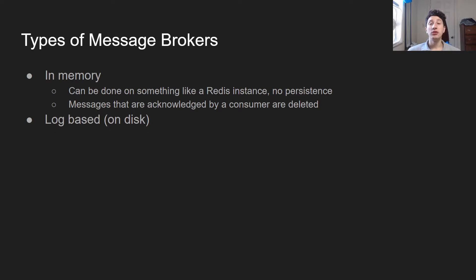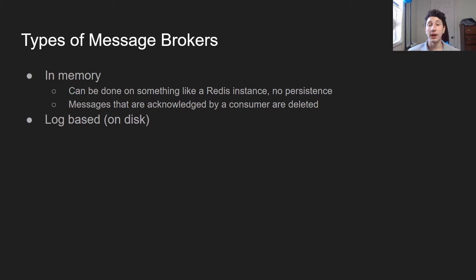So there are two main types of message brokers. The first is in-memory. For example, if we have something like a Redis instance, which is basically just a database that allows you to write to memory as opposed to disk, we can just go ahead and make a queue in there and establish some sort of long polling with a bunch of consumers. And then the second that a consumer acknowledges that it's processed a message, that'll be deleted.